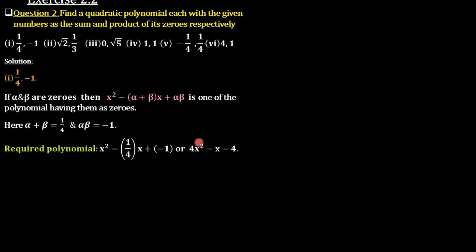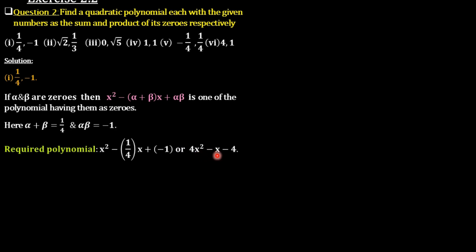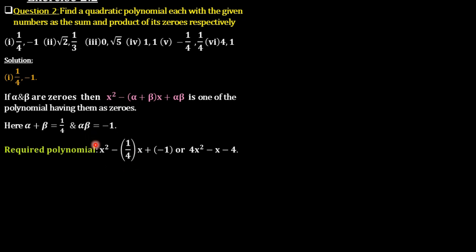This polynomial will also have the same sum of zeros: alpha plus beta equals 1/4, and product of zeros alpha·beta equals negative 1. That is, alpha plus beta equals negative of coefficient of x divided by coefficient of x², which gives negative of (negative 1) divided by 4, which is 1/4. So these two polynomials have the same sum and product of zeros.